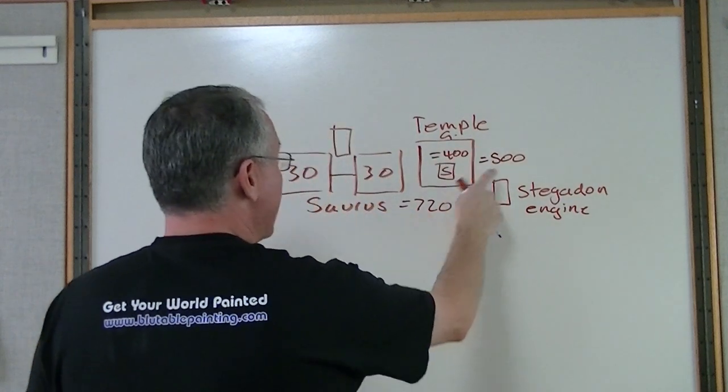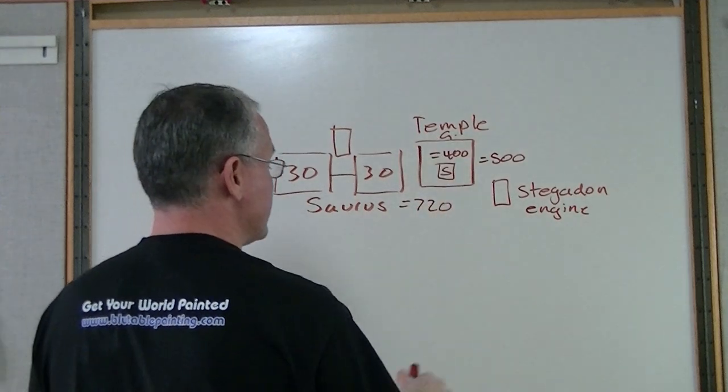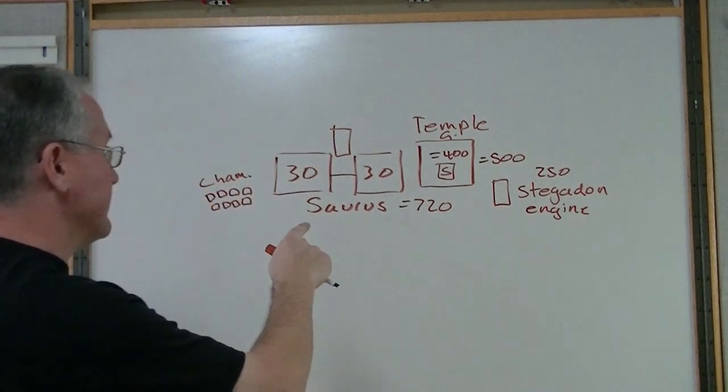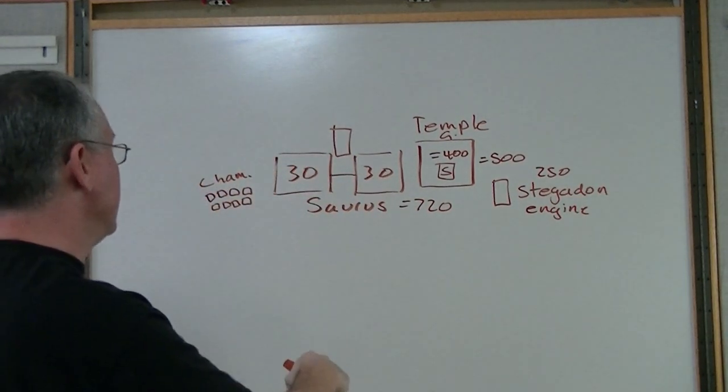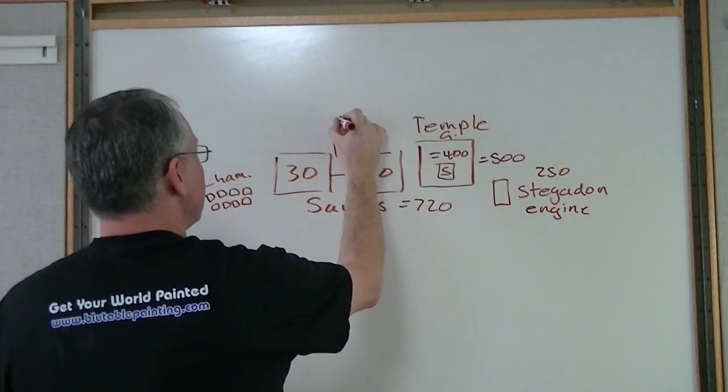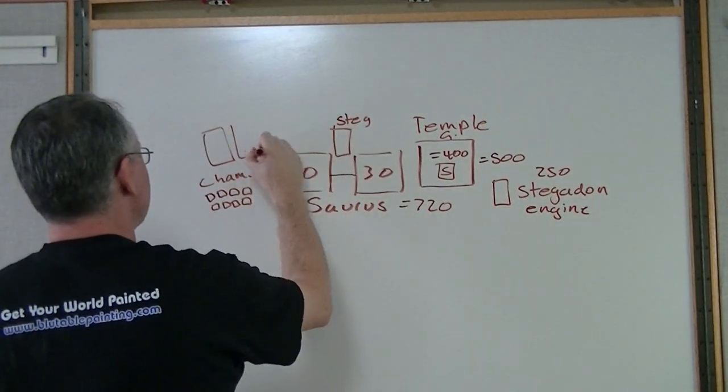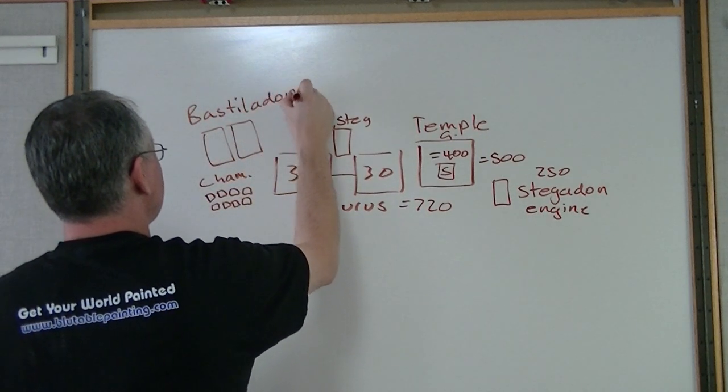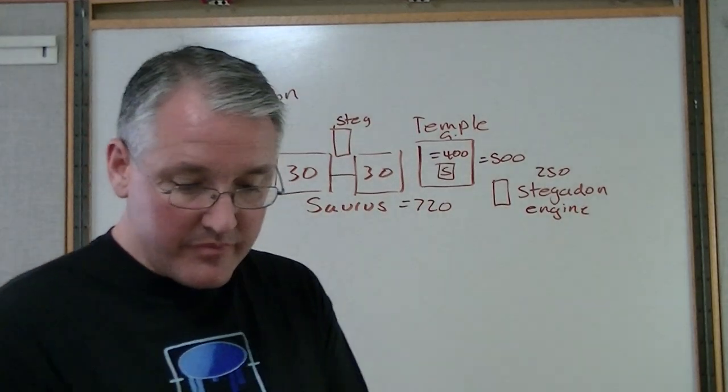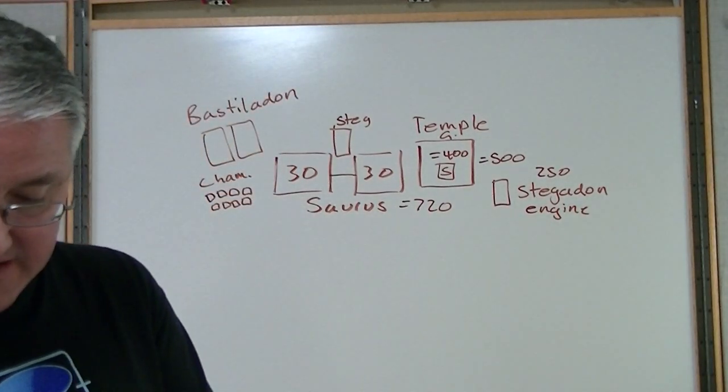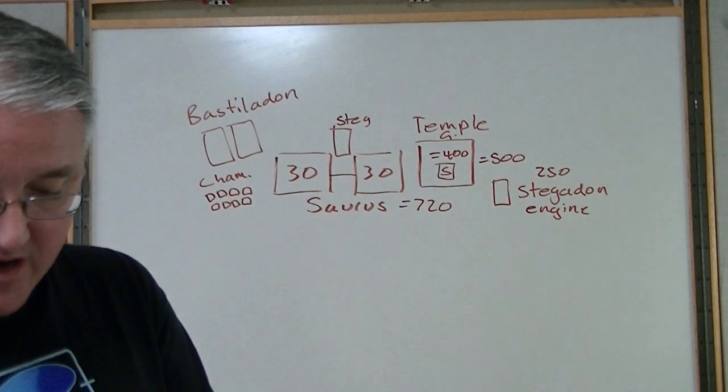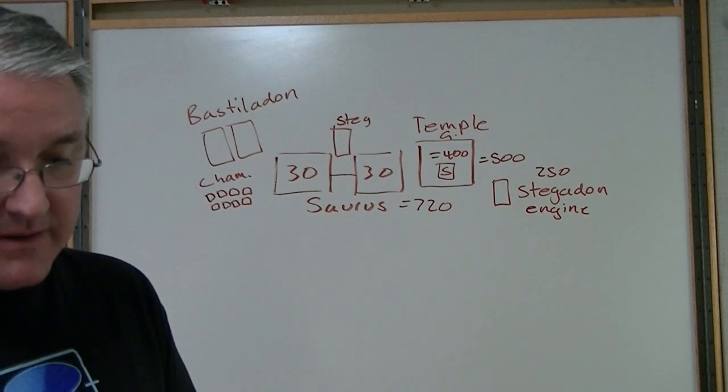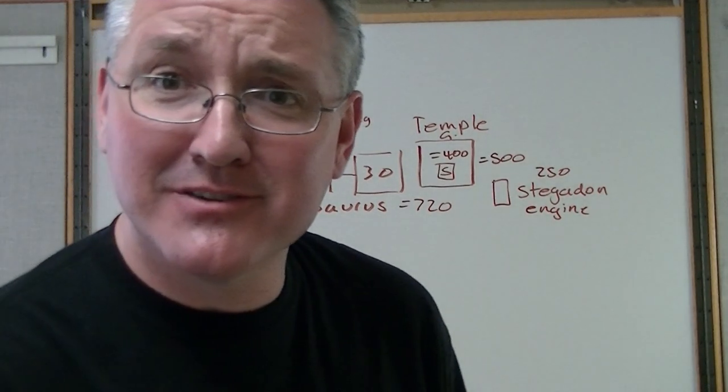So I'm right around 1600 points just with those three. And with the Stegadon over here let's call that 250. So that's 1700. I'll put Steg here. So the Bastiladons I have two, as far as I can tell you can make the tops magnetized for that. Okay so the Bastiladons, yeah they're kind of cool.